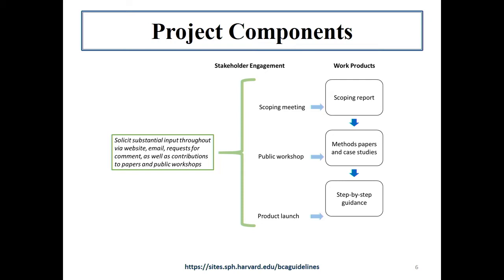We have three phases: the scoping report and this workshop; then a public workshop in November for which we'll be developing a series of methods papers and case studies probing the issues in more detail; then final guidance. The end date has been extended to October 2018, which gives us more time to get through all the steps. We are trying to figure out lots of different ways to involve stakeholders to make sure whatever we come up with is well-constructed and useful for all of you.